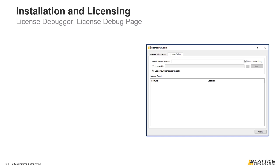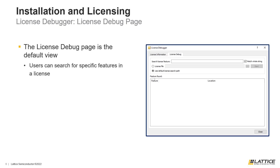The license debugging tool contains two tabs that can be used to debug licenses in different ways. The default tab that is open when the debugging tool is launched is called License Debug. This tab can be used to search for specific features in a license.